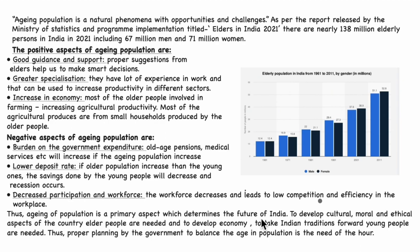Thus, aging of population is a primary aspect which determines the future of India. To develop cultural, moral, and ethical aspects of the country, elder people are needed, and to develop the economy and take Indian traditions forward, young people are needed. Proper planning by the government to balance the age of the population is the need of the hour. There is a graph from the Ministry of Statistics and Programme Implementation report shown here, representing the basic form of answer presentation.